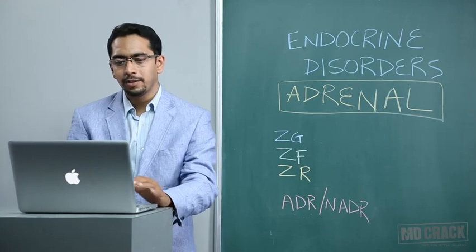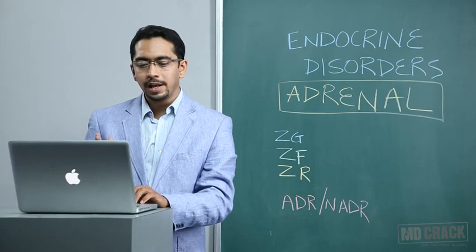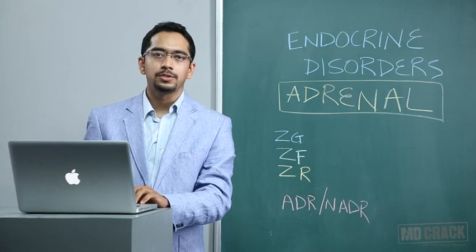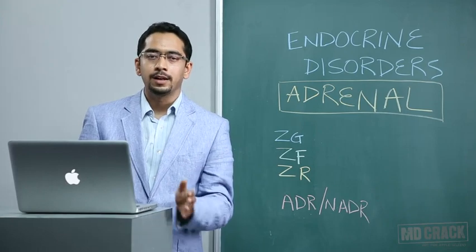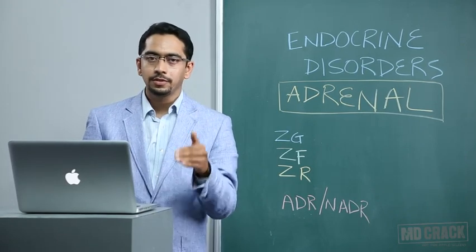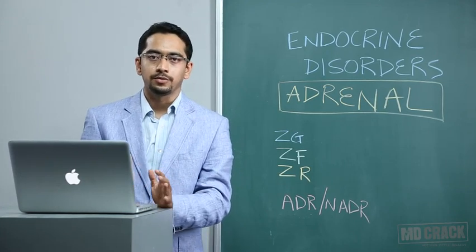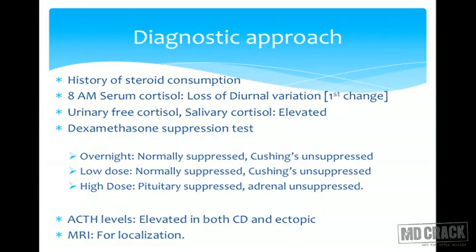In the diagnostic approach, first ask for history of exogenous steroid consumption. If absent, an 8 AM cortisol helps differentiate: in exogenous Cushing's, 8 AM cortisol is suppressed; in endogenous Cushing's, it is elevated. The second step is to check for diurnal variation, which is lost in Cushing's syndrome. Urinary free cortisol may be measured — levels are elevated. Salivary cortisol is another option but is not readily available.